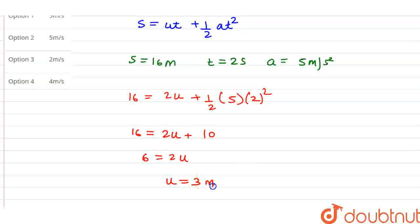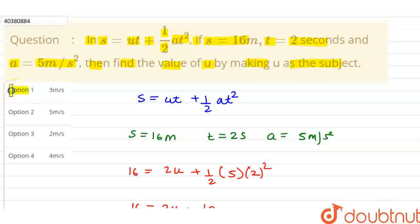So the value of u is equal to 3 meter per second. So which option is correct? Option 1 is the answer. Okay? Thank you friends.